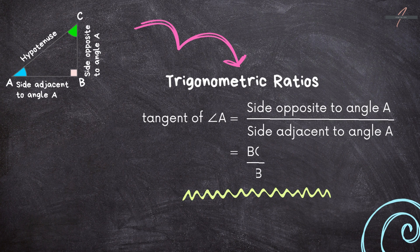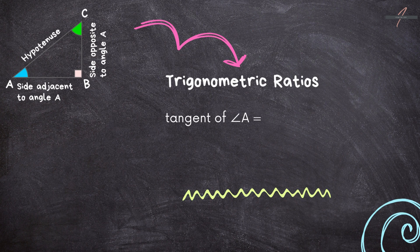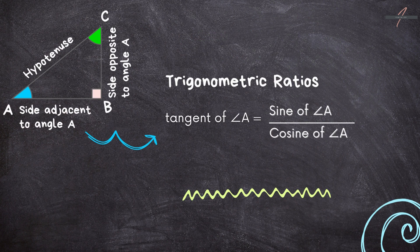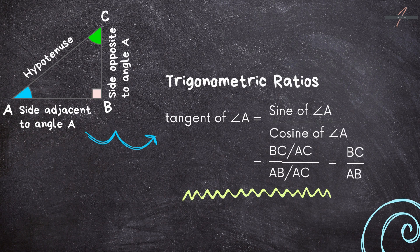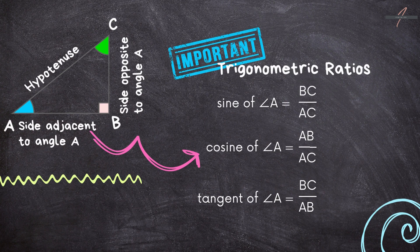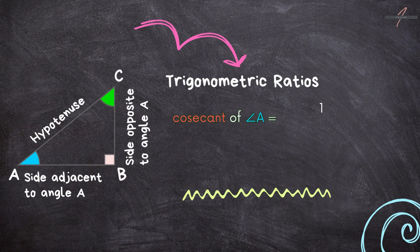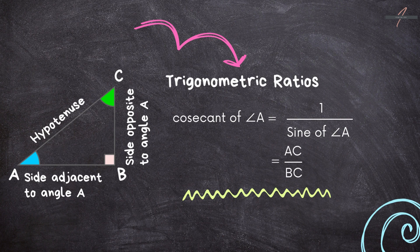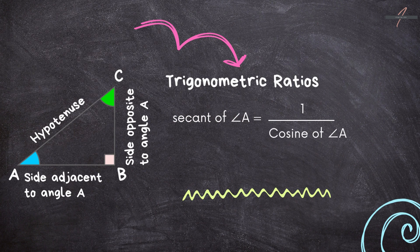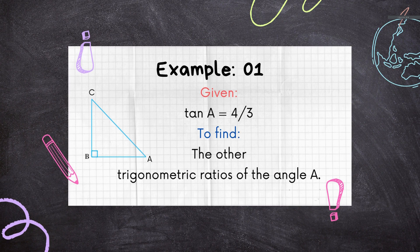That means BC upon AB. Tangent of an angle is actually equal to sine of the given angle divided by cosine of that angle — that is (BC/AC) divided by (AB/AC), which equals BC upon AB, as we had seen earlier. So sine of angle A is BC by AC, cosine of angle A is AB by AC, cosecant of angle A is 1 upon sine of angle A, that is AC upon BC, and secant of angle A is 1 upon cosine of angle A.